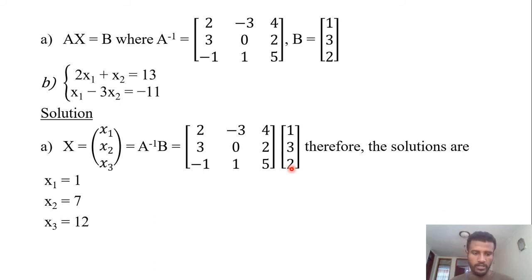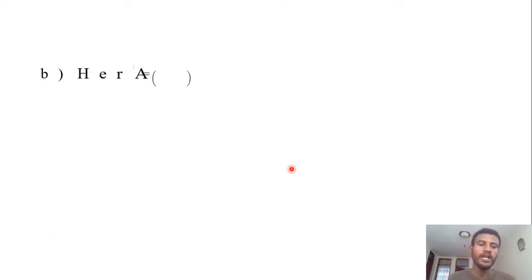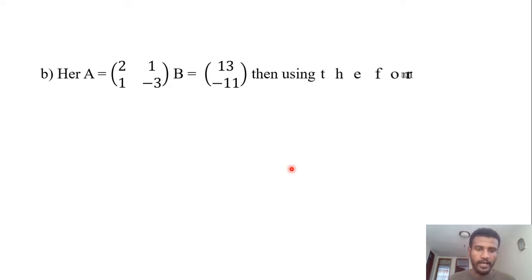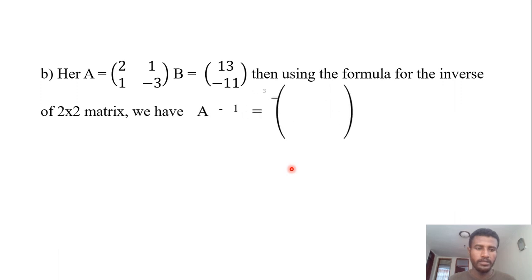And when we see example (b), here A is given us [2, 1; 1, -3], that means this is the augmented matrix and B is [13; -11]. Then using the formula for the inverse matrix method of a 2 by 2 matrix, we have A inverse.